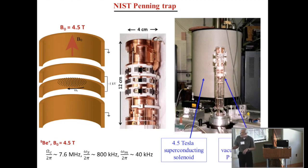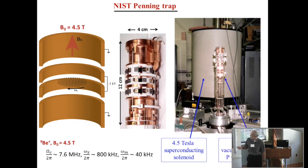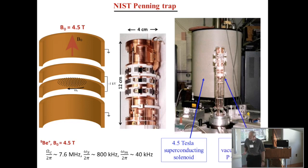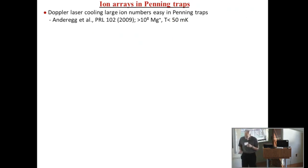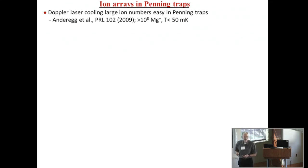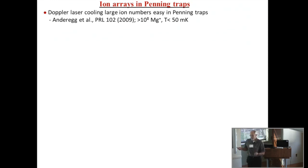Here's a picture of the penning trap we've been using for many years at NIST. The thing to point out is this is a huge trap — the distance from the ions to the walls is 2 centimeters, an order of magnitude larger than most RF traps. This sits in the room-temperature bore of a superconducting magnet, so it's a room-temperature system. We try to get a good background pressure in the mid 10^-11 torr.